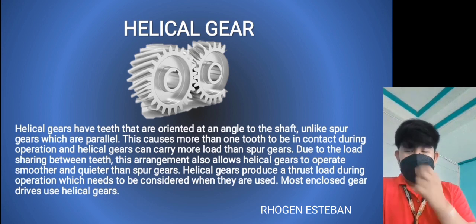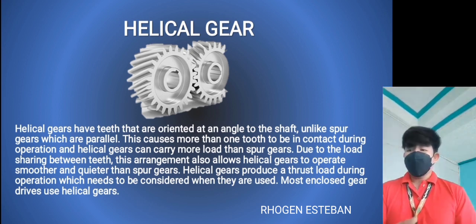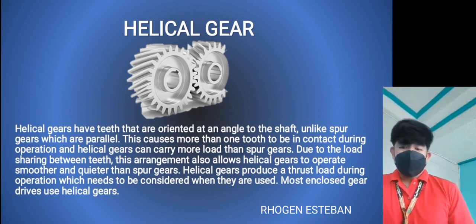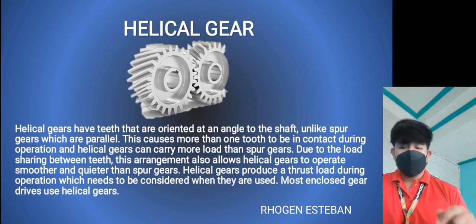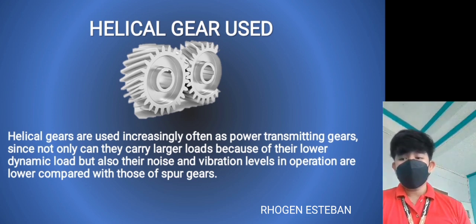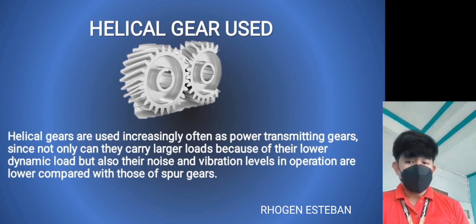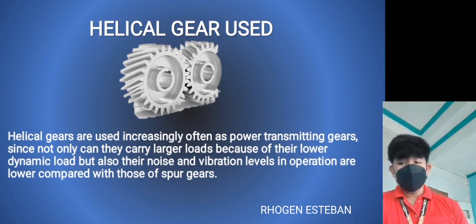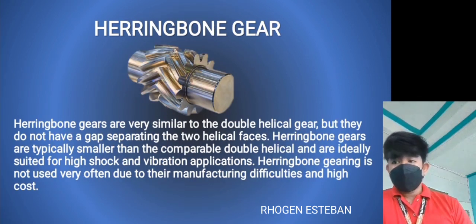Helical gears have teeth oriented at an angle to the axis, unlike spur gears which are parallel. This causes more teeth to be in contact during mesh. Helical gears are used increasingly as power transmitting gears since they can carry larger loads because of the lower dynamic load, and their noise and vibration levels are lower compared to spur gears.